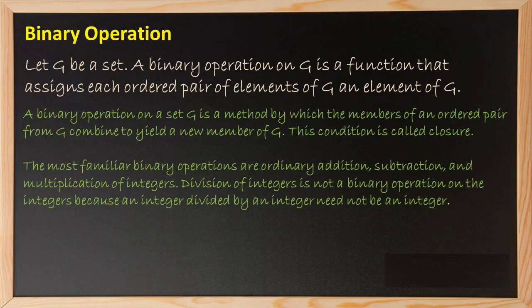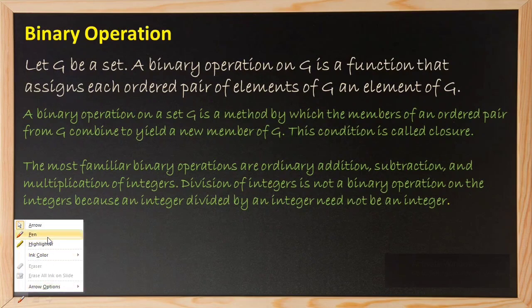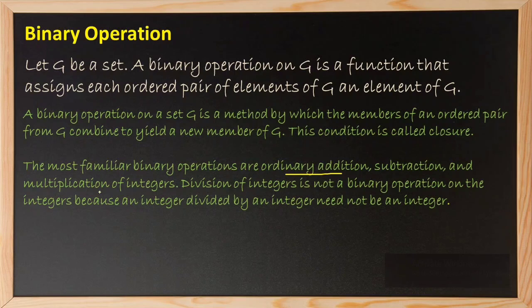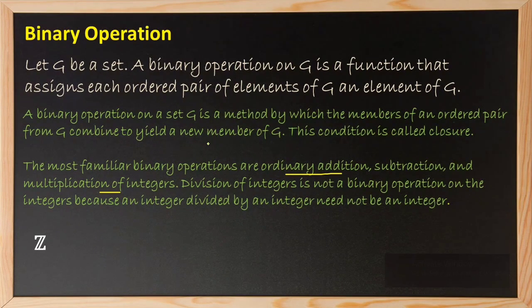The most familiar binary operations are ordinary addition, subtraction, and multiplication of integers. Whereas division of integers is not a binary operation on the integers. Addition, subtraction, and multiplication are binary operations on integers. Let us verify — we will take the set of integers and show this.